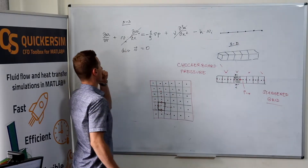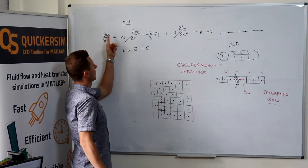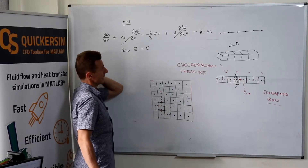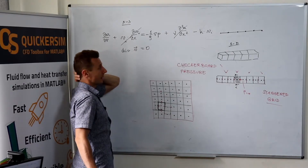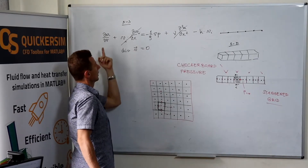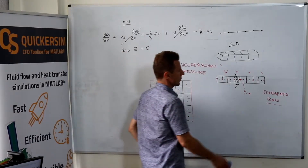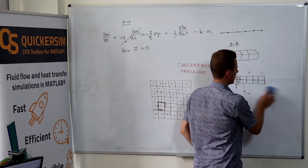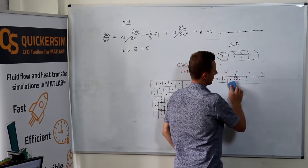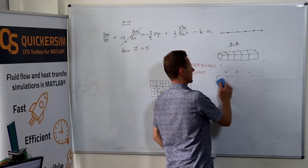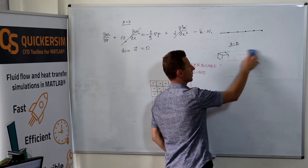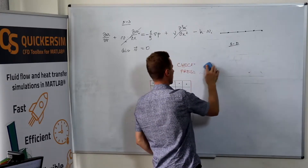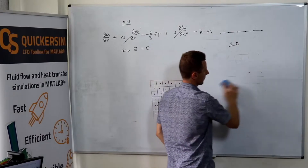Right now, considering the Navier-Stokes equation — the steady case or unsteady case — what kind of problems would you encounter when dealing with discretization, when you want to build a matrix and solve it numerically?